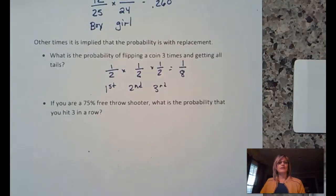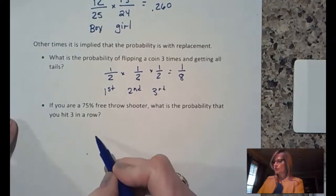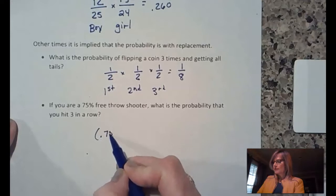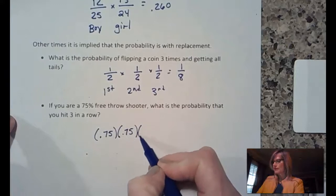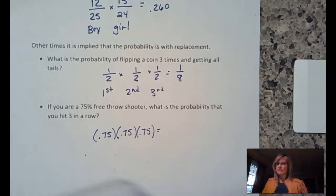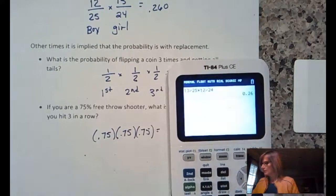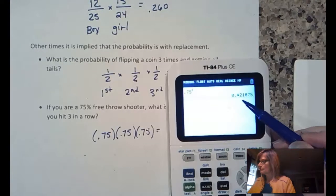If you are a 75% free throw shooter, what's the probability that you hit three in a row? Does your free throw percentage change during the game? Not really. So, if you're a 75% free throw shooter, your first shot has a probability of 0.75. Your second shot is still 0.75. And your third shot is still 0.75. This is kind of like with replacement. Things are not changing. So, we will raise 0.75 to the third. So, that's 0.422.